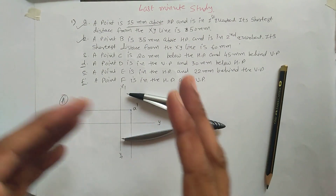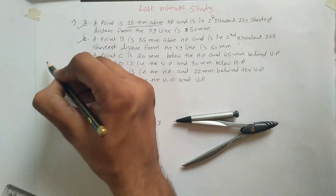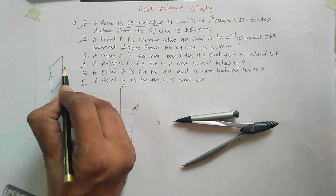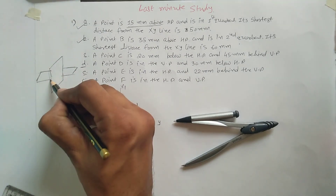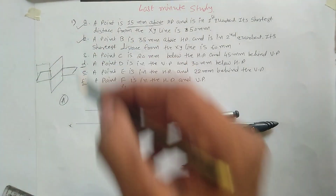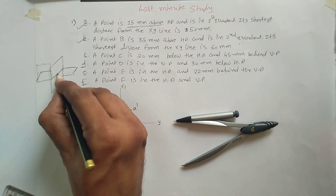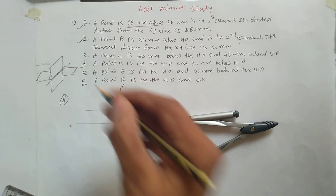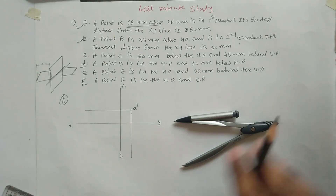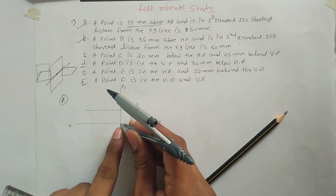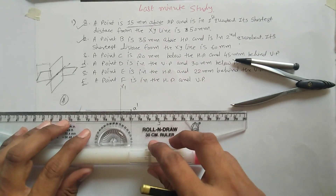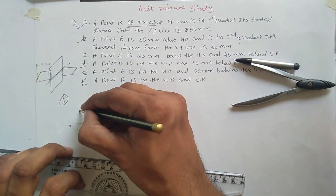Now assume two planes like this — this is your XY line, and there is one more plane which is the side view, which is the profile plane. The distance between the XY intersecting line and the point — the shortest distance — is always seen in the side view, not in the front view or top view. So construct that: the XY intersecting line with 50mm measured over here, and find out the intersecting point.